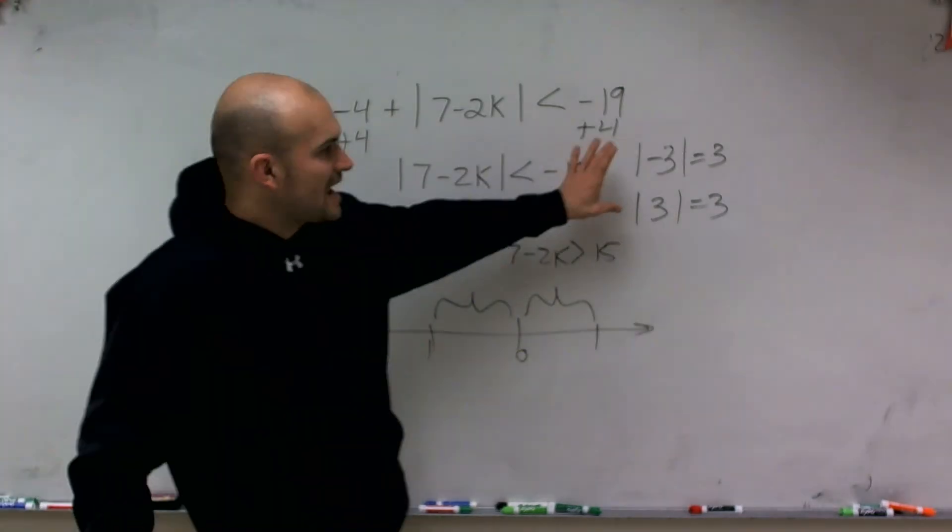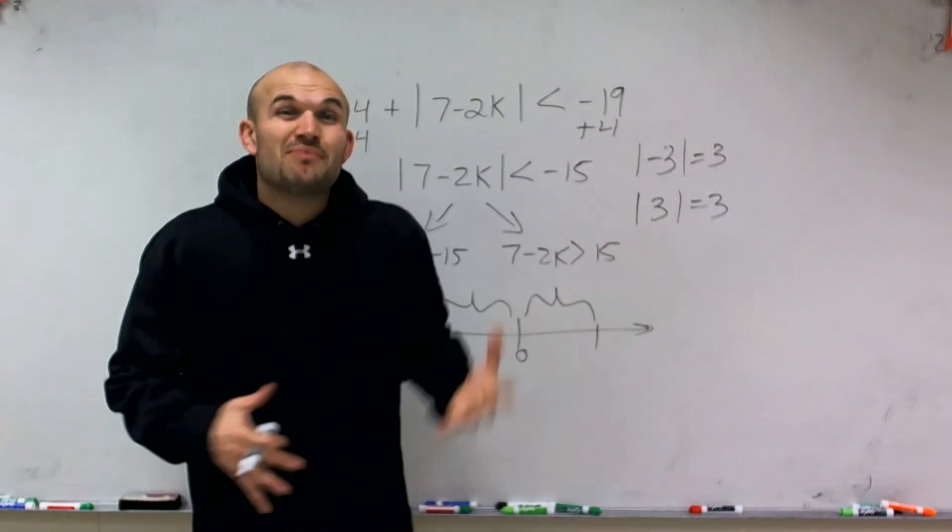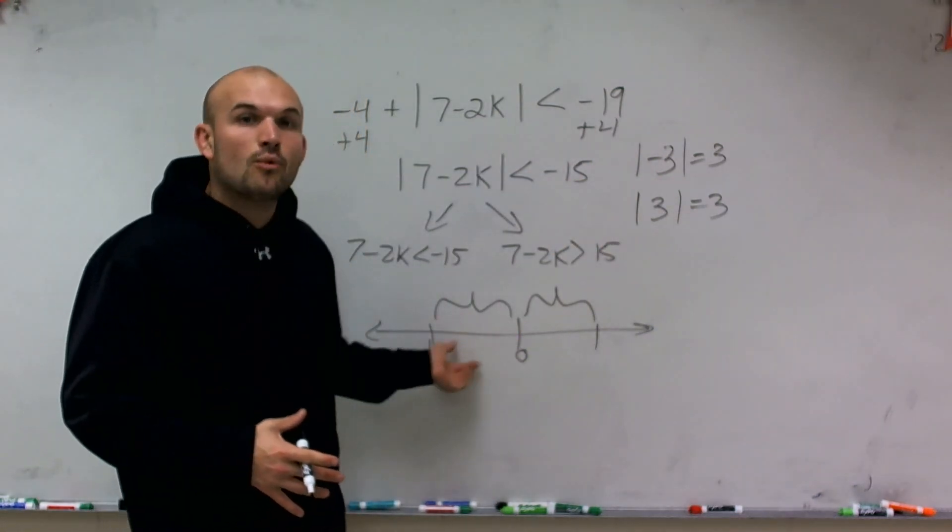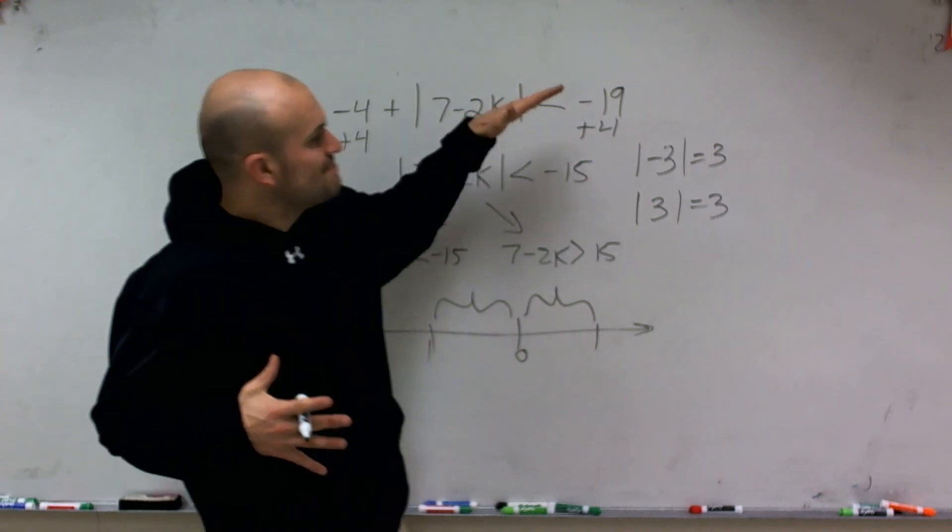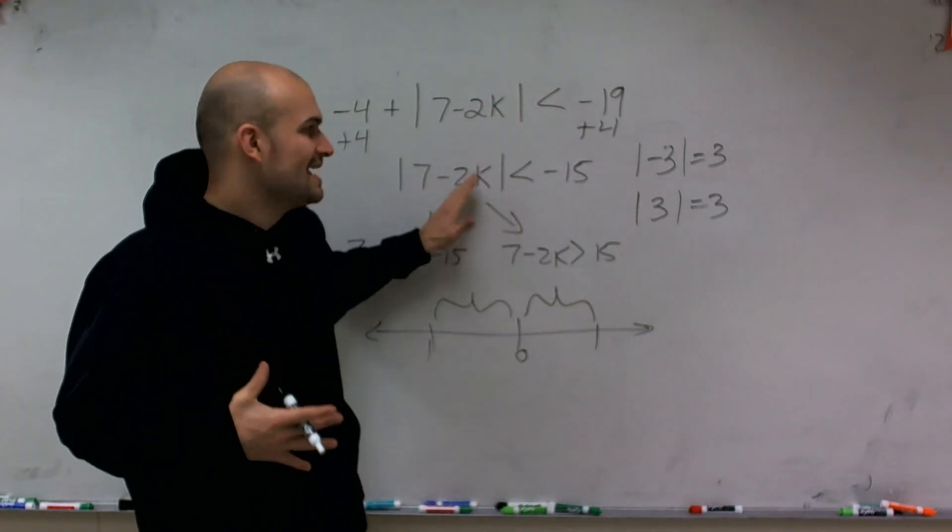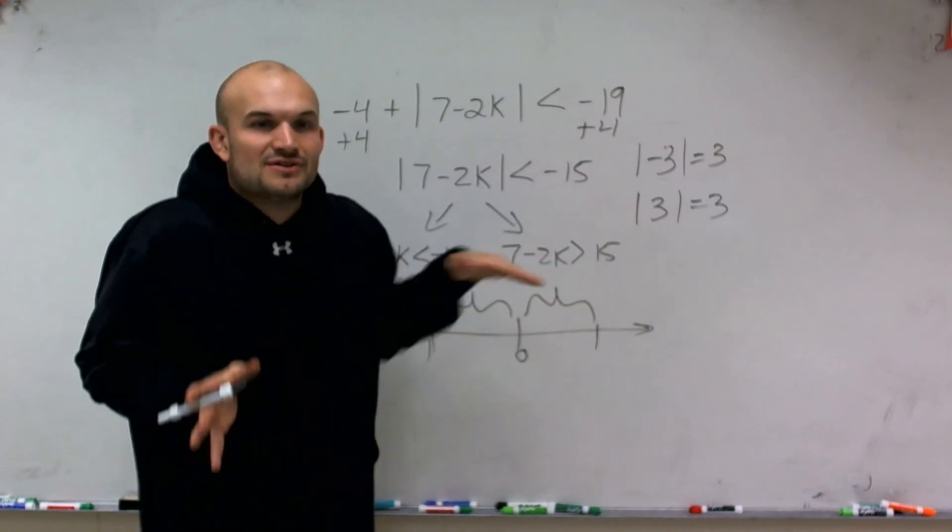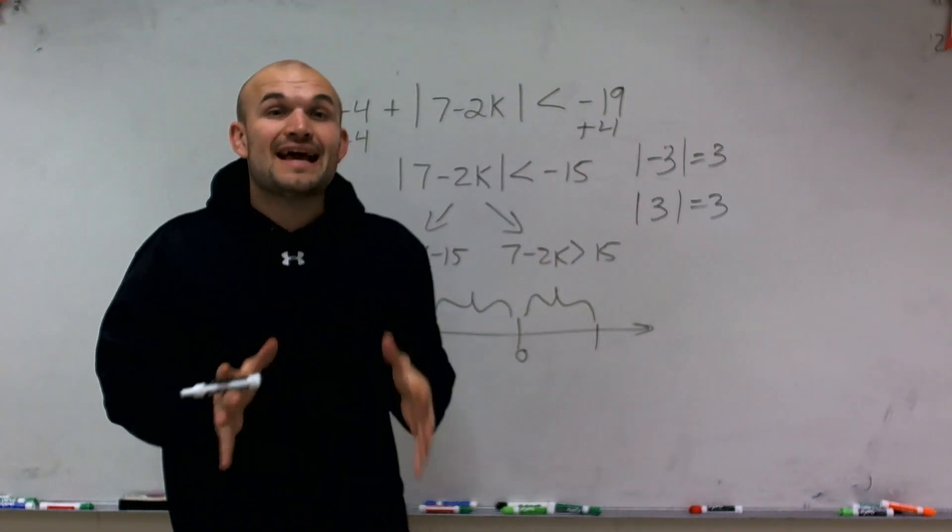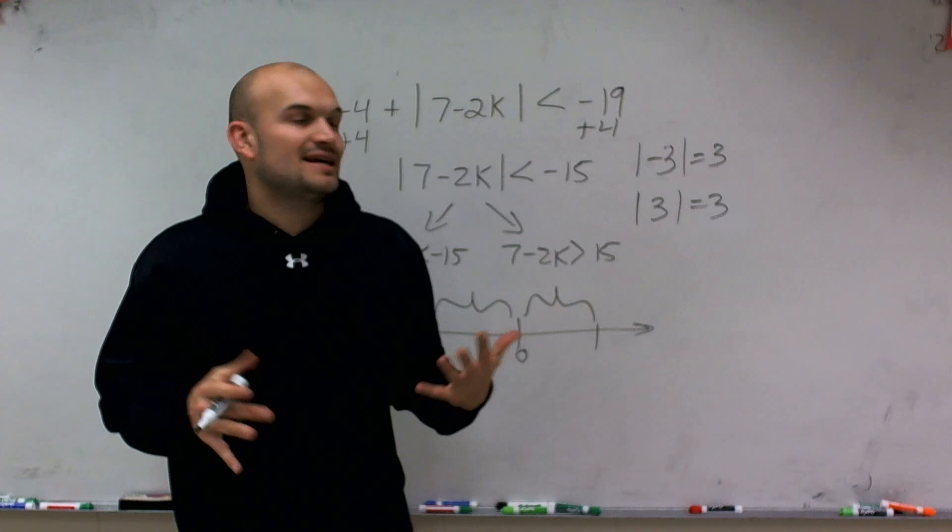So when we deal with absolute value, no matter what the number is, positive or negative, you're always going to be a distance away from 0. And so it's impossible for us to take the absolute value of a number, no matter what it is, and get a negative value. Because you can't have negative distance. You can have negative direction, but you can't have negative distance.